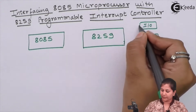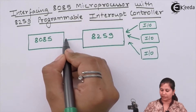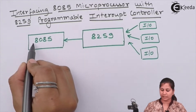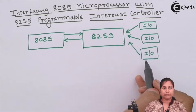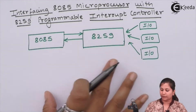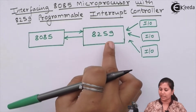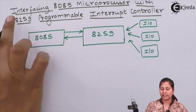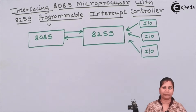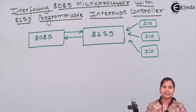The input/output devices first send requests to the 8259, and with respect to these requests, the 8259 will interrupt the microprocessor. The microprocessor gives an acknowledgement signal, and then the interrupts from the input/output devices are executed. This is how the 8085, 8259, and peripheral devices work in conjunction. Interfacing means the communication path between the two components — the 8085 and the 8259.